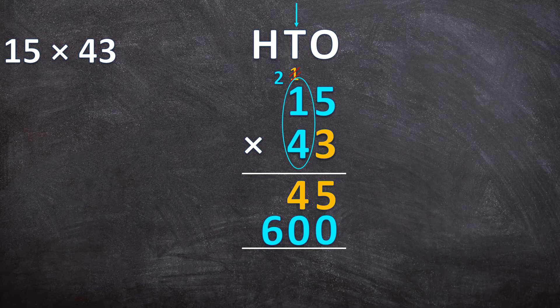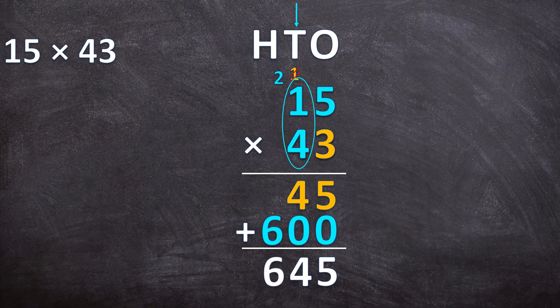Now that we have our answer for 3 times 15 and our answer for 40 times 15, we just need to add those two together to get our final answer. So 5 plus 0 is 5, 4 plus 0 is 4, and we only have 6 in the hundreds place. So 15 times 43 is 645.